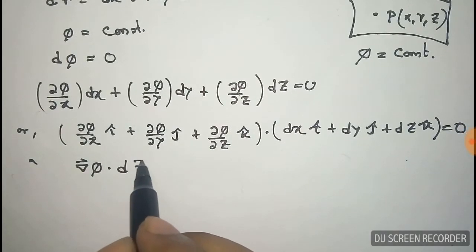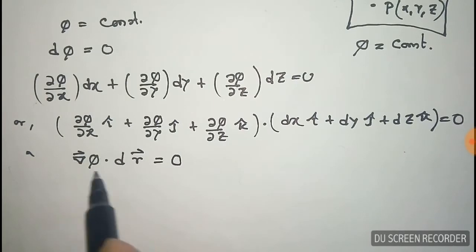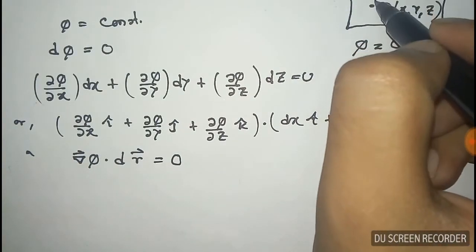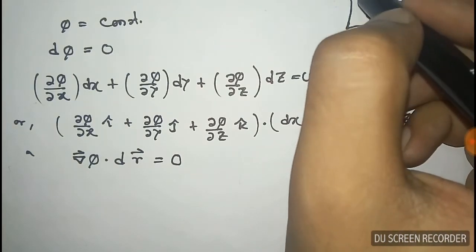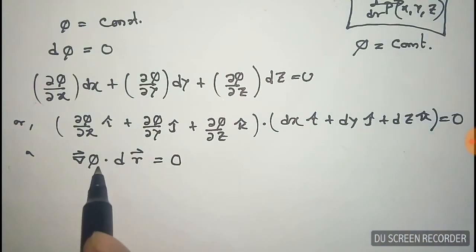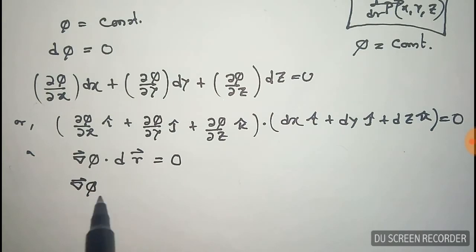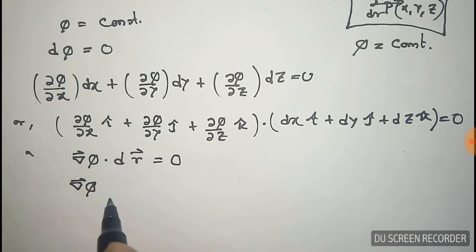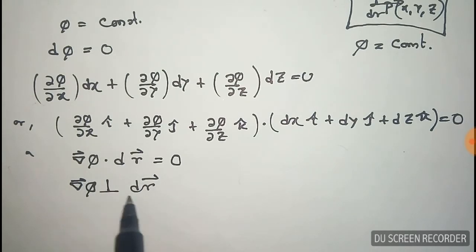So we can see from this that grad φ and dr are perpendicular to each other. Since dr lies on the surface φ, grad φ is also perpendicular to the surface φ. Thus we have proved that grad φ is perpendicular to the surface.